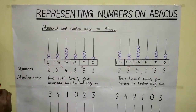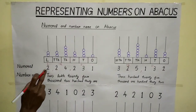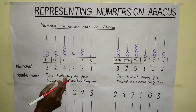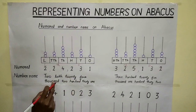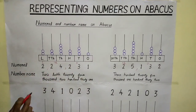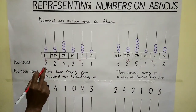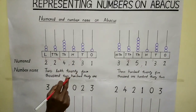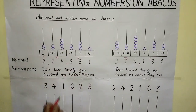Then it is very easy to write the number name. How many lakhs are here? Two lakhs. How many thousands? Twenty-four thousand. Two hundred thirty-one. I repeat the number name: two lakhs, twenty-four thousand, two hundred thirty-one.